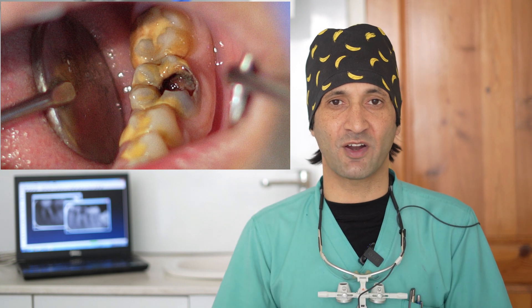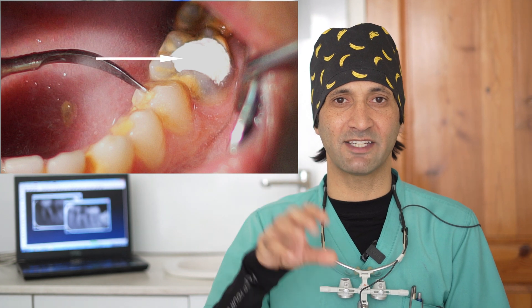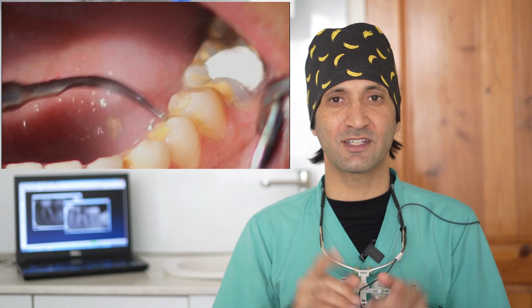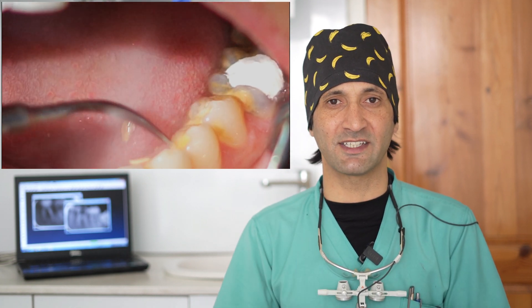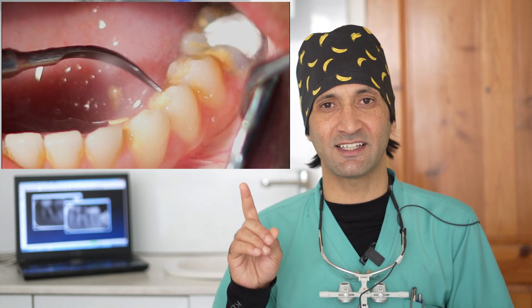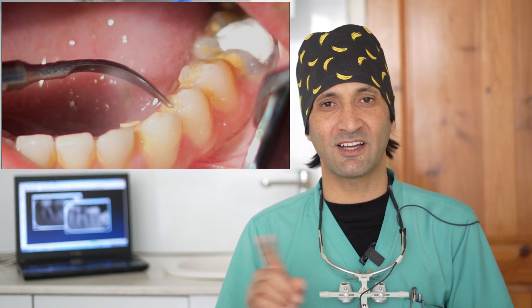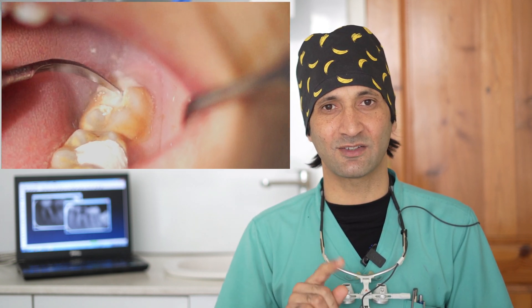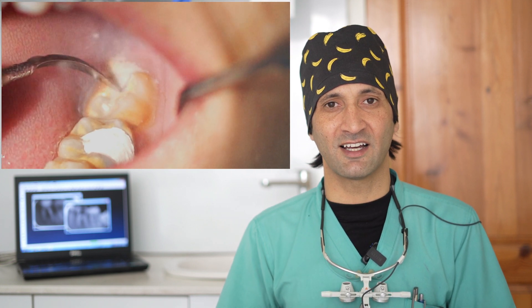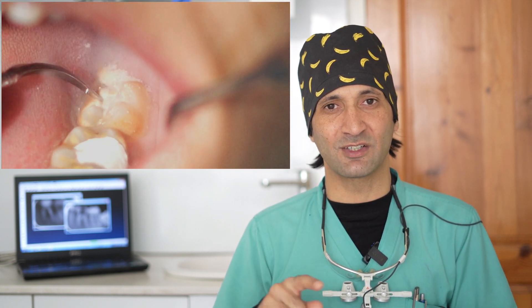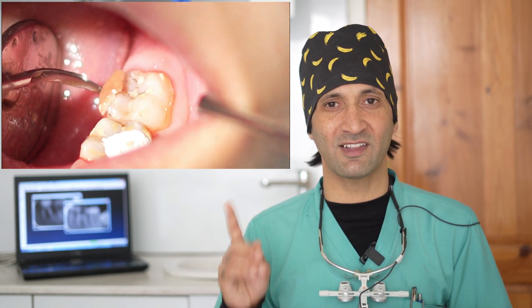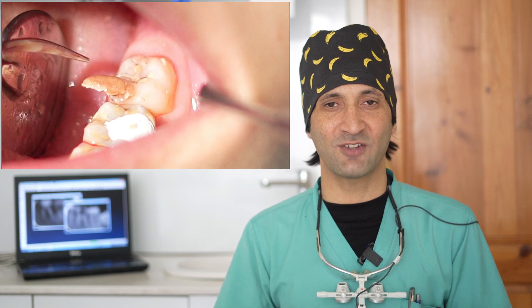Everywhere you can see there is a huge buildup of calculus on the surrounding teeth, which needs to be removed before starting root canal treatment. So first, I placed a temporary filling over the cavity so that I could clean all the area — removing calculus from the adjacent teeth to reduce the microbial load. You can see here that the cavity is temporarily filled, and then I started cleaning the adjacent teeth, first on the premolar side, and then moving to the molars.